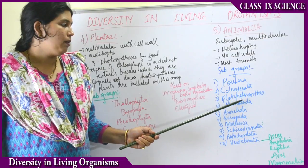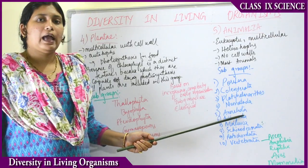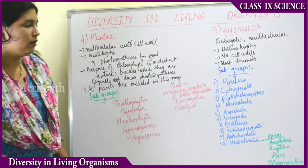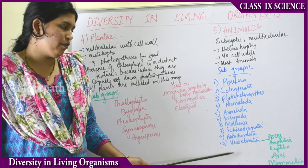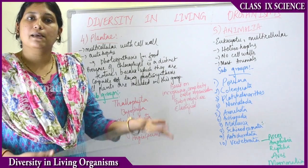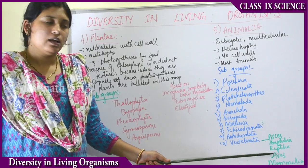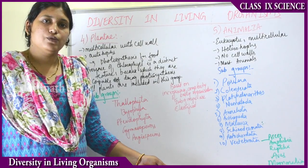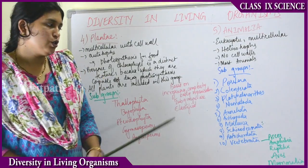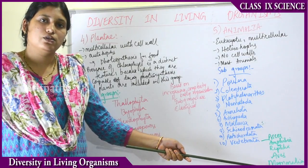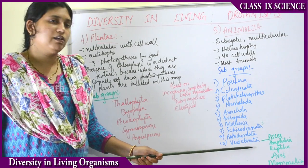The 10 subgroups of Animalia are Porifera, Cnidaria, Platyhelminthes, Nematoda, Annelida, Arthropoda, Mollusca, Echinodermata, Protochordata, and Vertebrata. Vertebrata is further sub-classified into five small groups: Pisces, Amphibians, Reptiles, Aves, and Mammals. Vertebrata means organisms having the vertebral column or backbone.